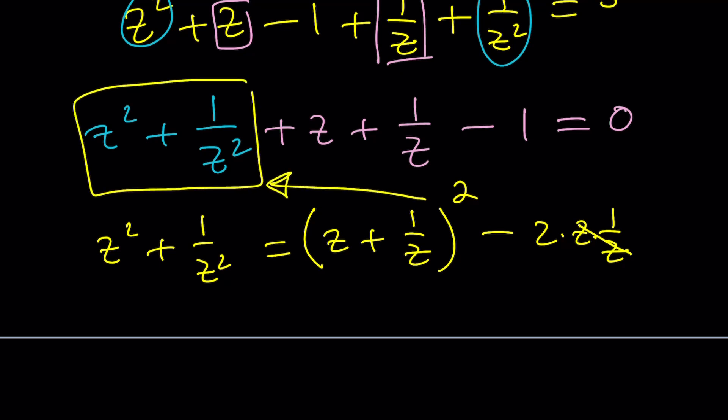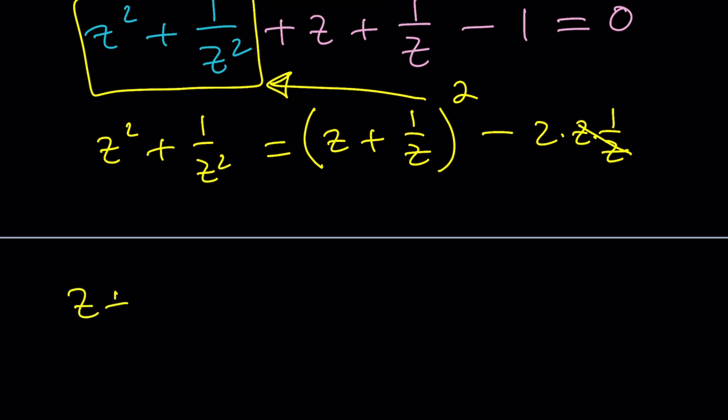So let's go ahead and replace this guy over here with this. Okay. That'll give us z plus 1 over z squared minus 2. Don't forget the 2 here. That's important. Plus z plus 1 over z minus 1 equals 0. Awesome. This is the power of substitution. Substitution is awesome. Don't you think?